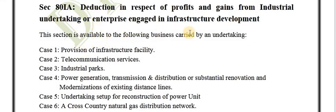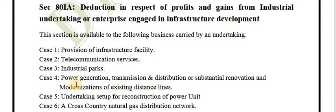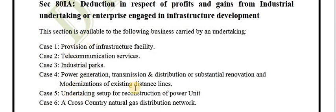This section is available to the following businesses carried on by an undertaking. Case one is provision of infrastructure facilities like roads, bridges, and dams. Case two is telecommunication services. Case three is industrial tech parks. Case four is power generation, transmission and distribution, or substantial renovation and modernization of existing transmission lines. Case five is undertakings set up for reconstruction of a power unit. Case six is a cross-country natural gas distribution network.